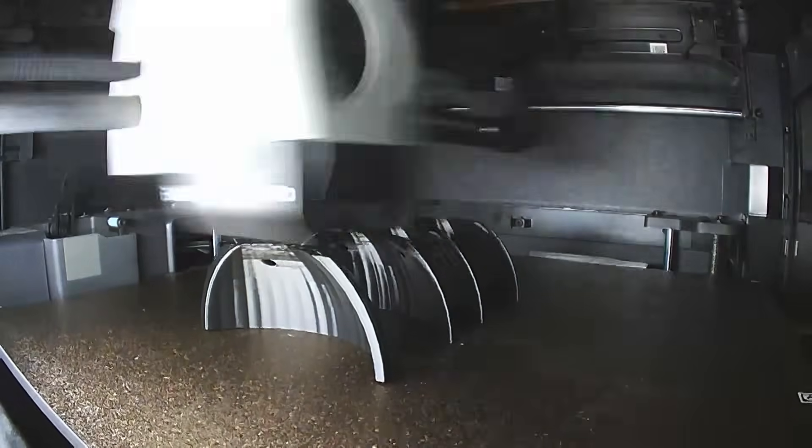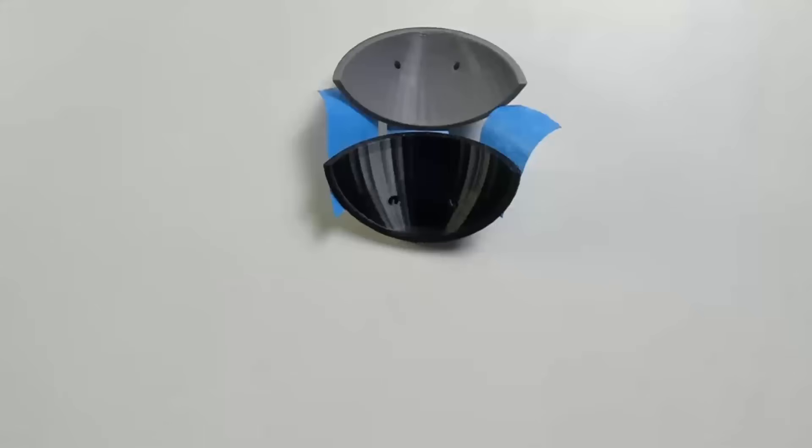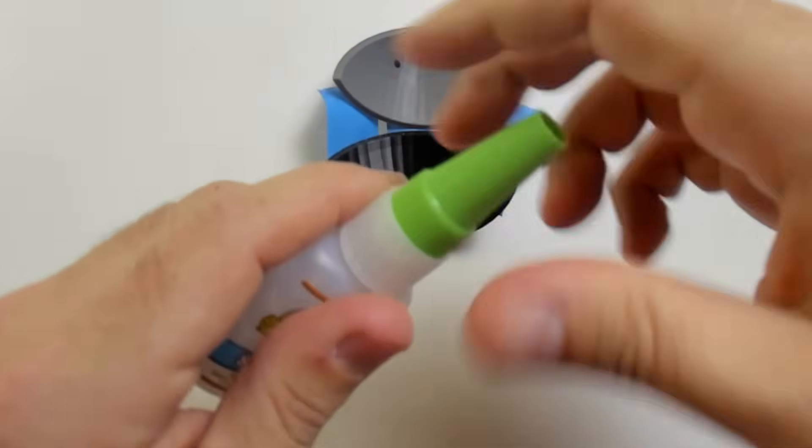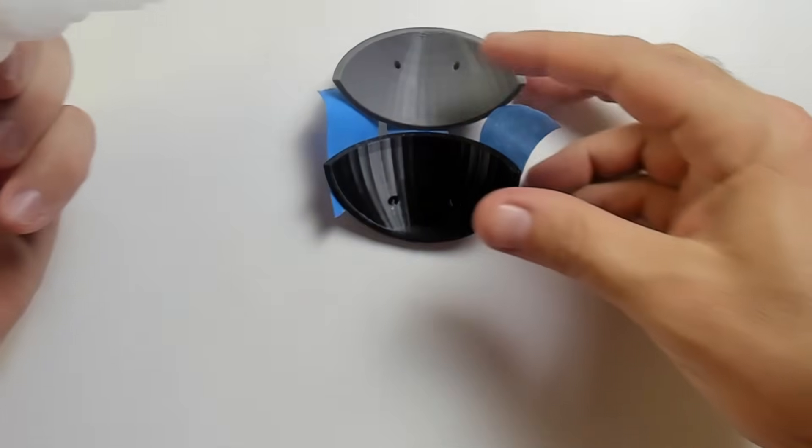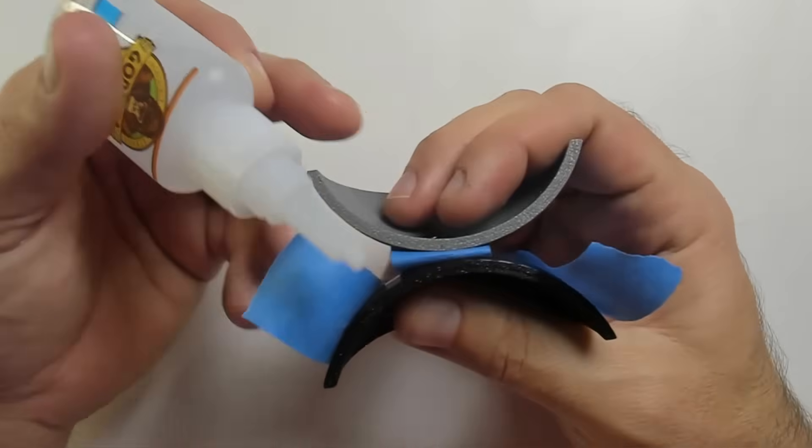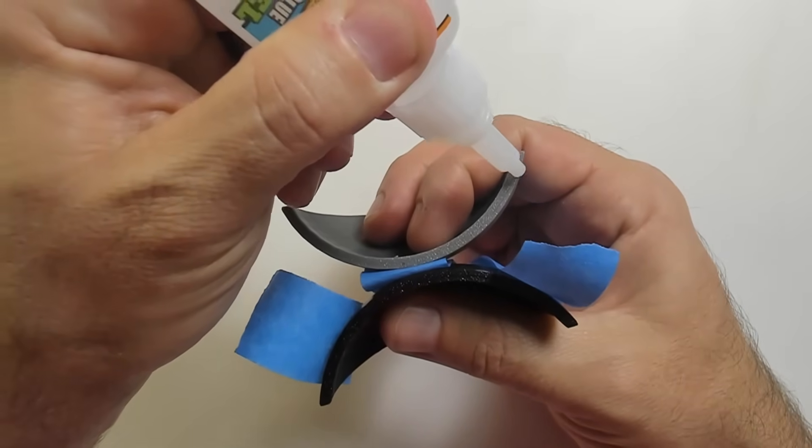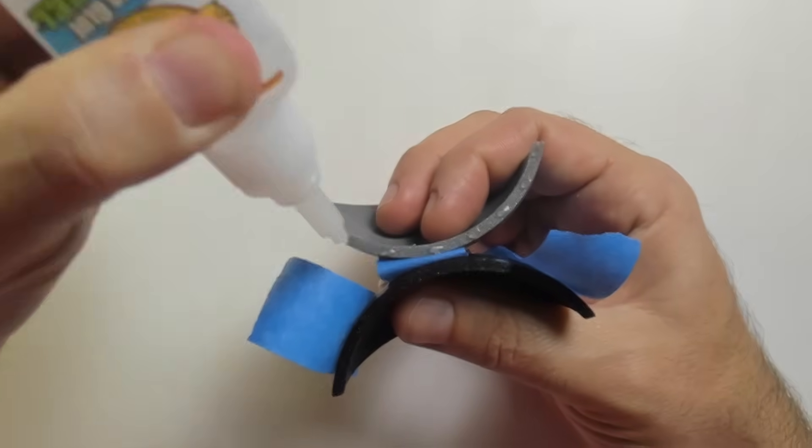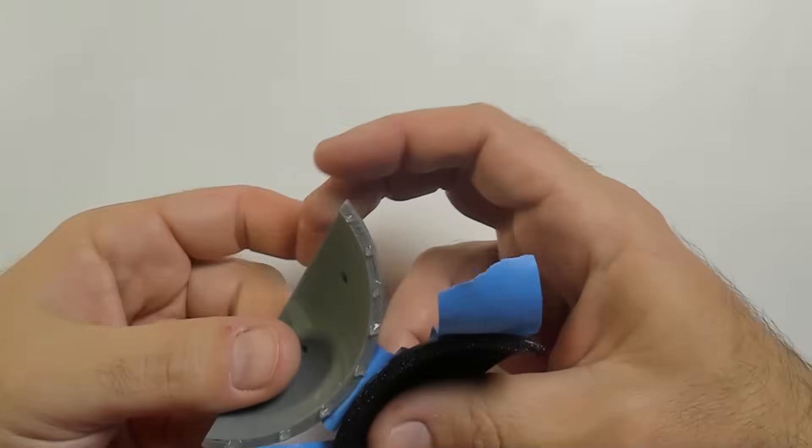I made 4 sets of test prints to try out each method. The first method is just to glue the parts together. This Gorilla Super Glue Gel is normally what I use on my prints. I tape the two halves together to hold them in place. Now I'm applying a bunch of glue dots all the way across the seam. Then hold it together with the tape while it cures.